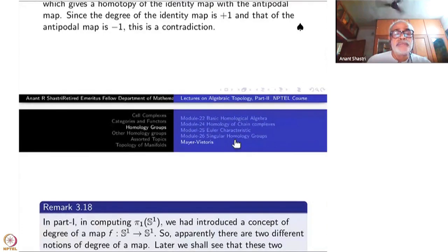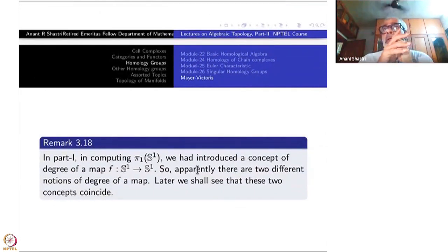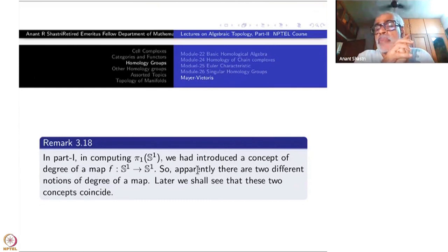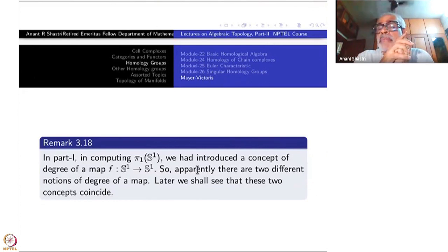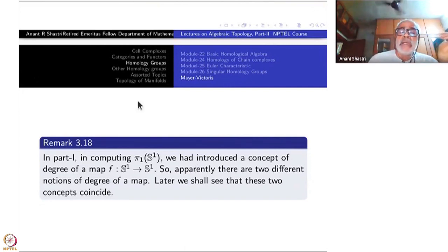Let us make one more comment. In Part 1, we introduced a degree of a map from S^1 to S^1 using just the fundamental group. Actually even before computing the fundamental group, we had the notion of degree and used it to compute π_1(S^1) and show it is isomorphic to Z. That degree and this degree defined via homology are actually the same, though the definitions are different. We will see this later.